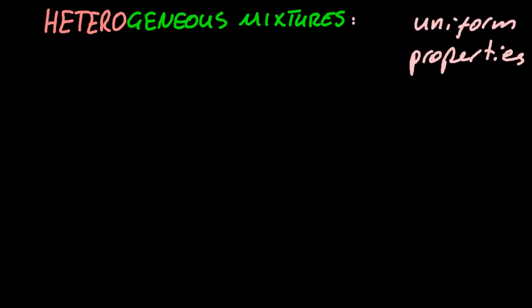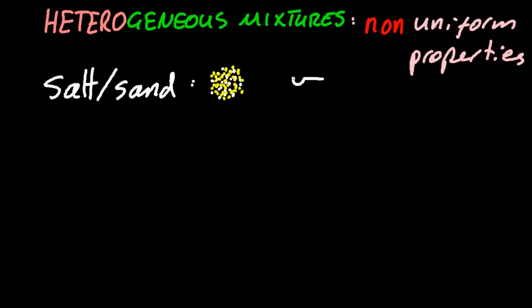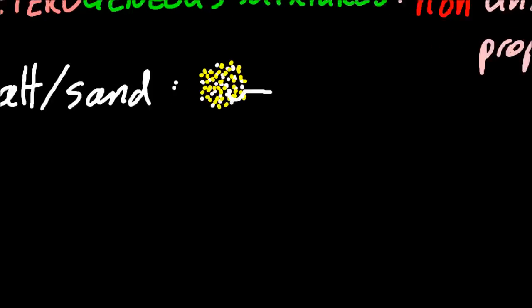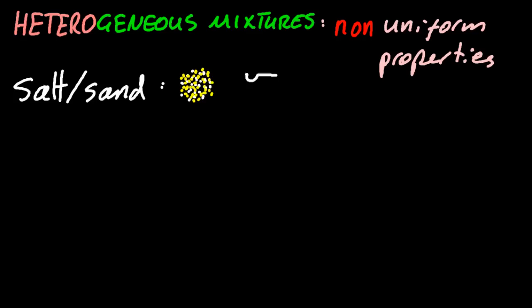There must be heterogeneous mixtures as well. Hetero means other - I like to think of it as different - with non-uniform properties. Let's take the classic example of salt and sand. If you look closer, depending on where you take your sample, you're going to have a different ratio of salt to sand.